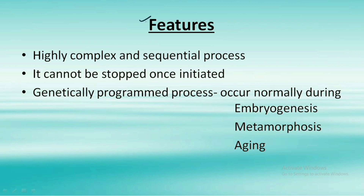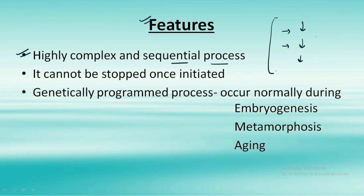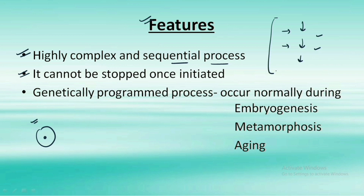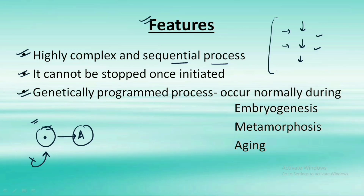Now let's talk about the features of apoptosis. The first feature is that it is a very complex and sequential process — the complete process of apoptosis has many steps involved, which we'll cover in future slides. The next point is that it cannot be stopped once initiated. Once a cell has been marked for apoptosis, it cannot be safeguarded from undergoing that process.